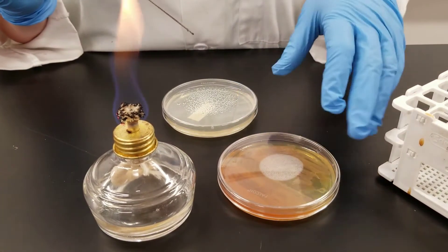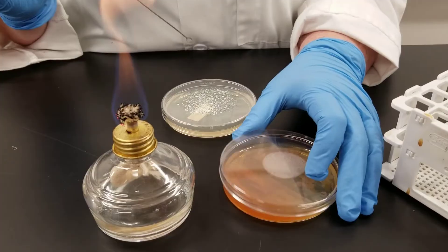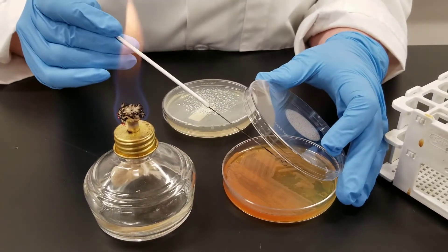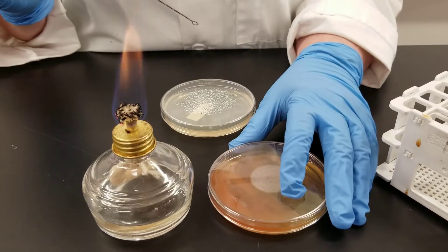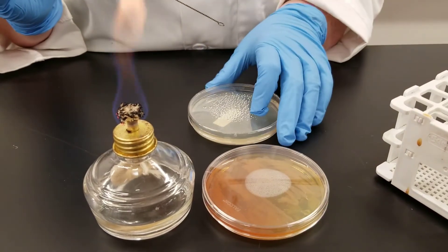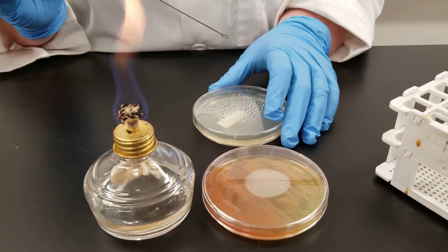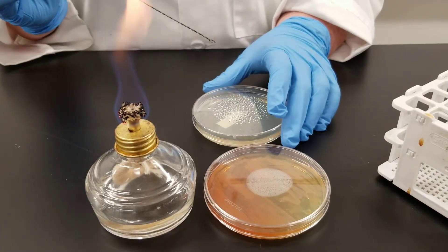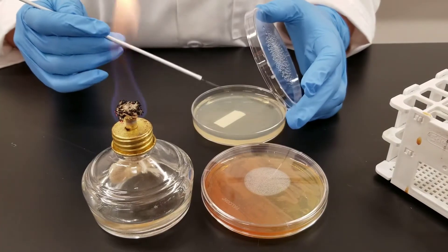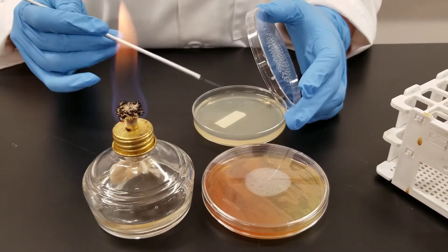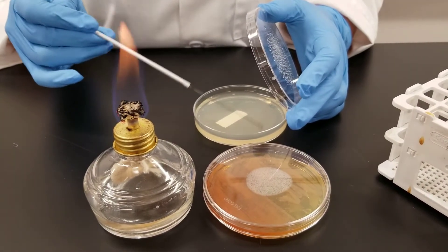Once again, I have flamed this. So now I need to once again go into my stock plate, pick a sample. Now what I'm going to do on this TSA plate, tryptocase soy agar plate, it's like nutrient agar. Most everything will grow on it. I'm going to do a streak isolation. We want to end up with individual colonies. In this first area, I'm going to do a heavy streak back and forth.